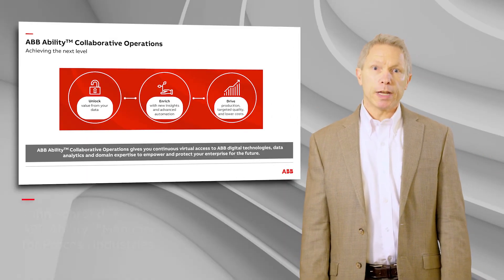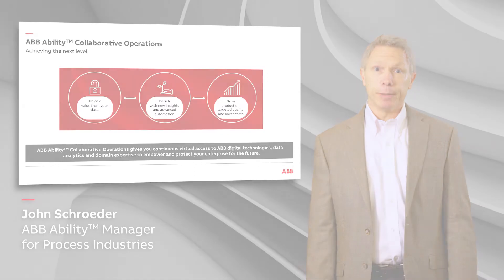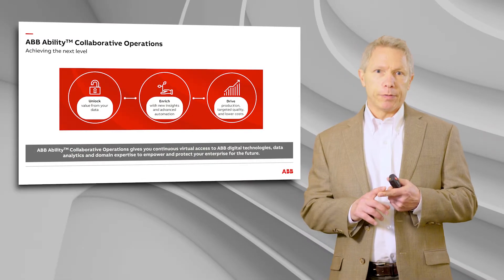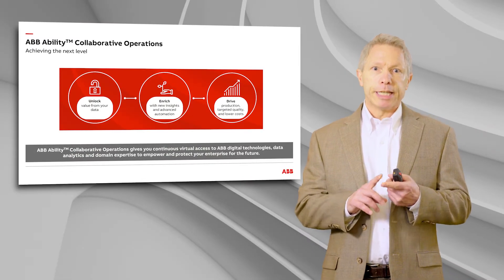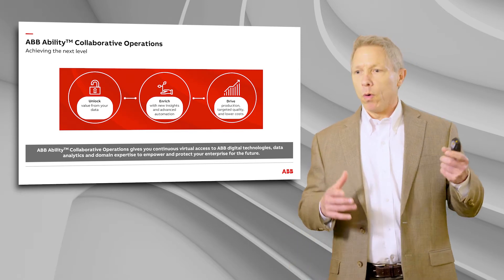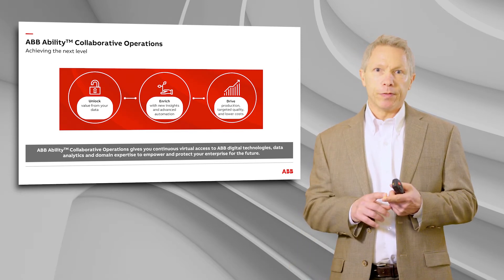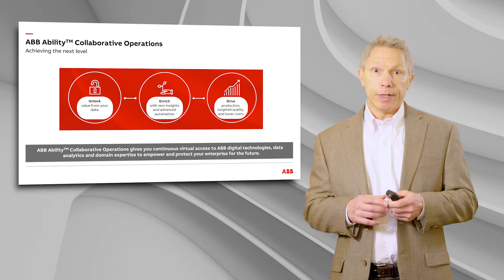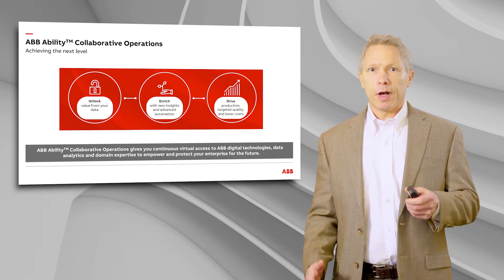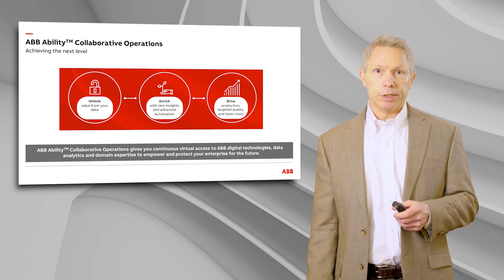Hi everyone, I'm John Schroeder and I manage ABB Ability for Pulp and Paper. What I'm going to talk about today is ABB Ability Collaborative Operations. The first question is: what is ABB Ability Collaborative Operations? It really consists of a couple of things. First is the technology that we think of when we think of Industry 4.0 or the Industrial Internet of Things — new technology that ABB is leveraging to provide a new portfolio of solutions.